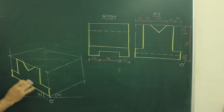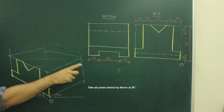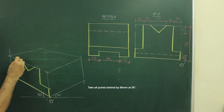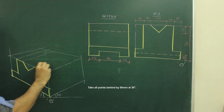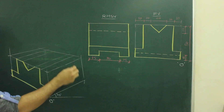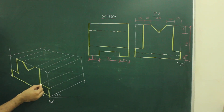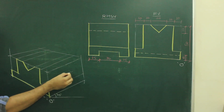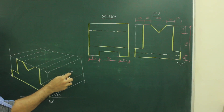All of you know that whatever is there in front, the same thing will be behind also. So we have to go how much behind — according to width. Width is 60, so we have to go behind by 60. We will take all points behind by 60. Remember that this point will also be going behind by 60, so it will not go till here, it will be only till here.